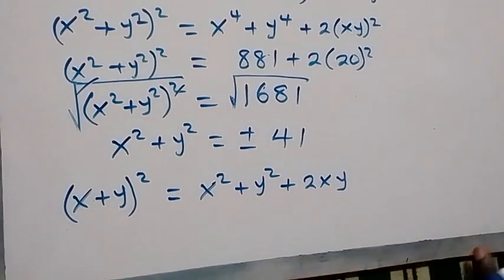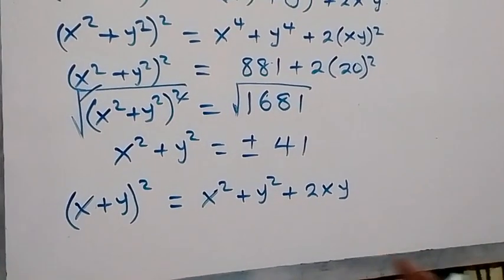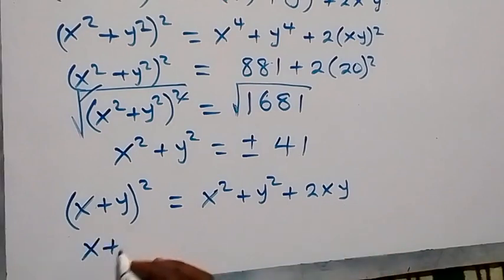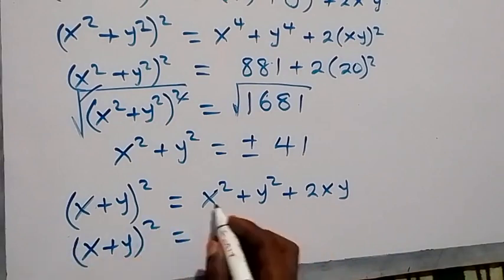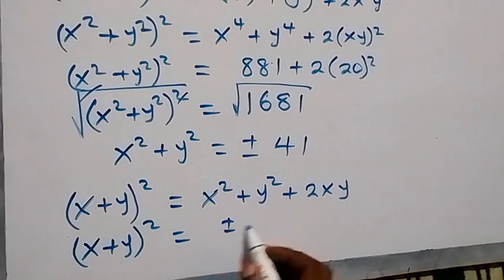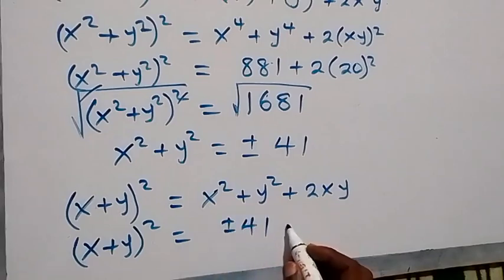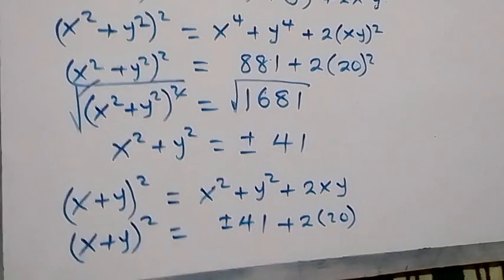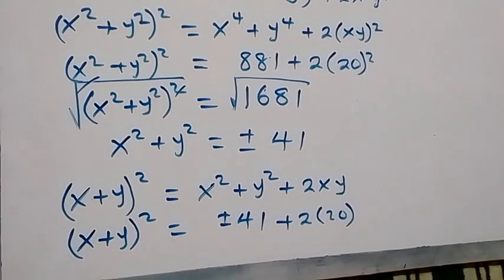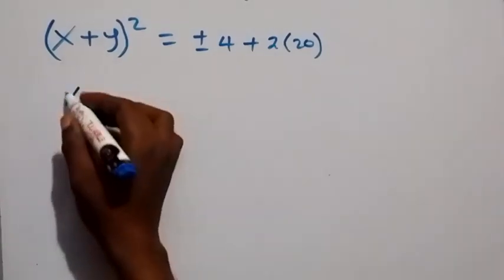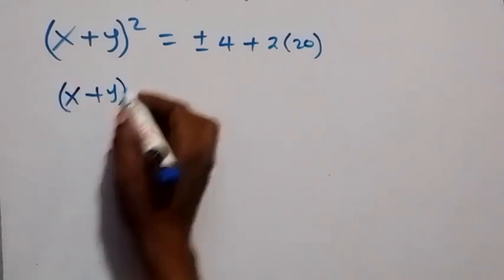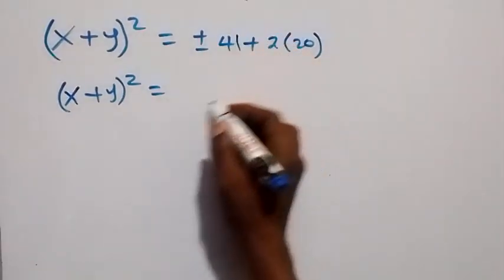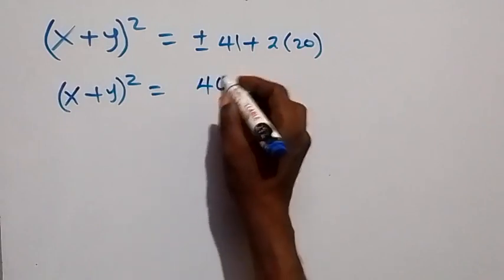Making substitutions: x squared plus y squared is plus or minus 41, and xy from equation 2 is 20. So x plus y all squared equals plus or minus 41 plus 2 times 20, which is 40. Therefore x plus y all squared equals 40 plus or minus 41.